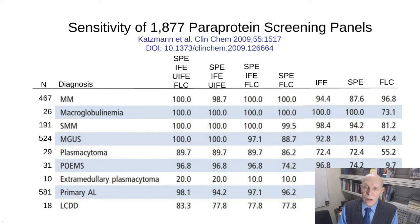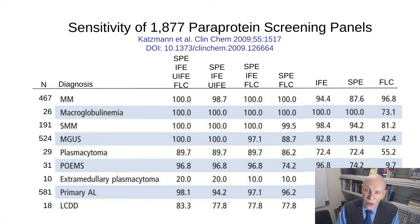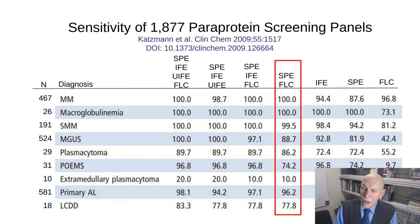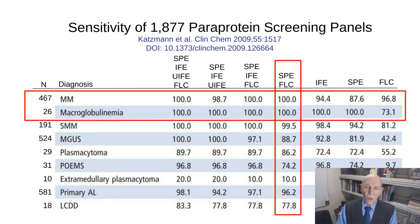Some of our data comes from a classic study by Dr. Katzman at the Mayo Clinic of almost 2,000 patients with monoclonal gammopathies. The columns show different tests: SPE (serum protein electrophoresis), IFE (serum immunofixation), UIFE (urine immunofixation), and FLC (free light chain ratio), with numbers representing percent detection. Using serum protein electrophoresis plus serum free light chain test, we picked up 100% of multiple myeloma and Waldenström's macroglobulinemia cases — the same result achieved by adding urine immunofixation and serum immunofixation.